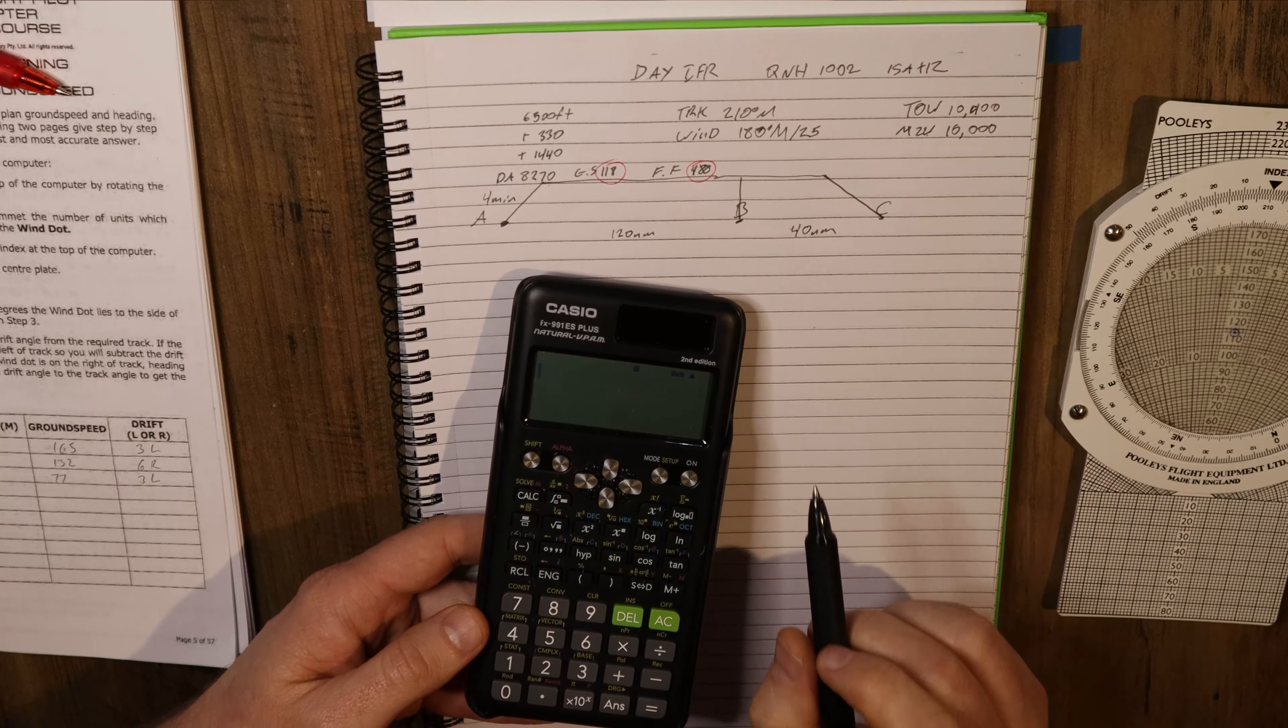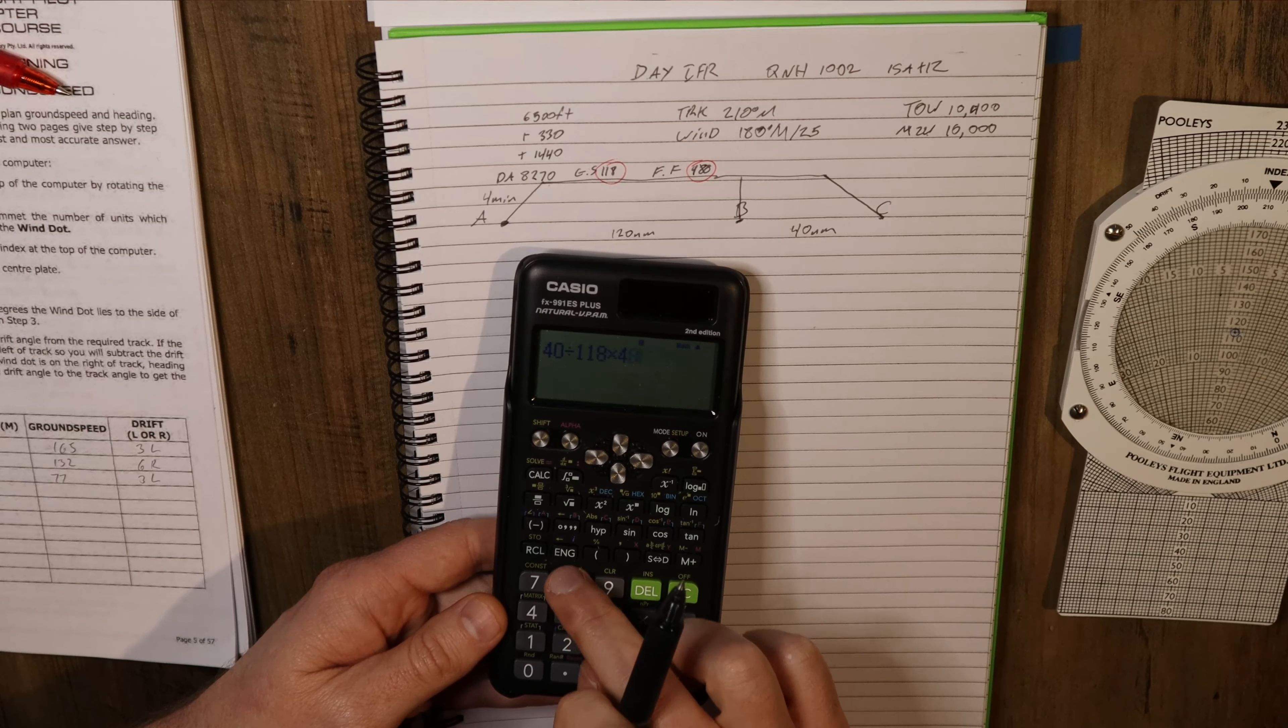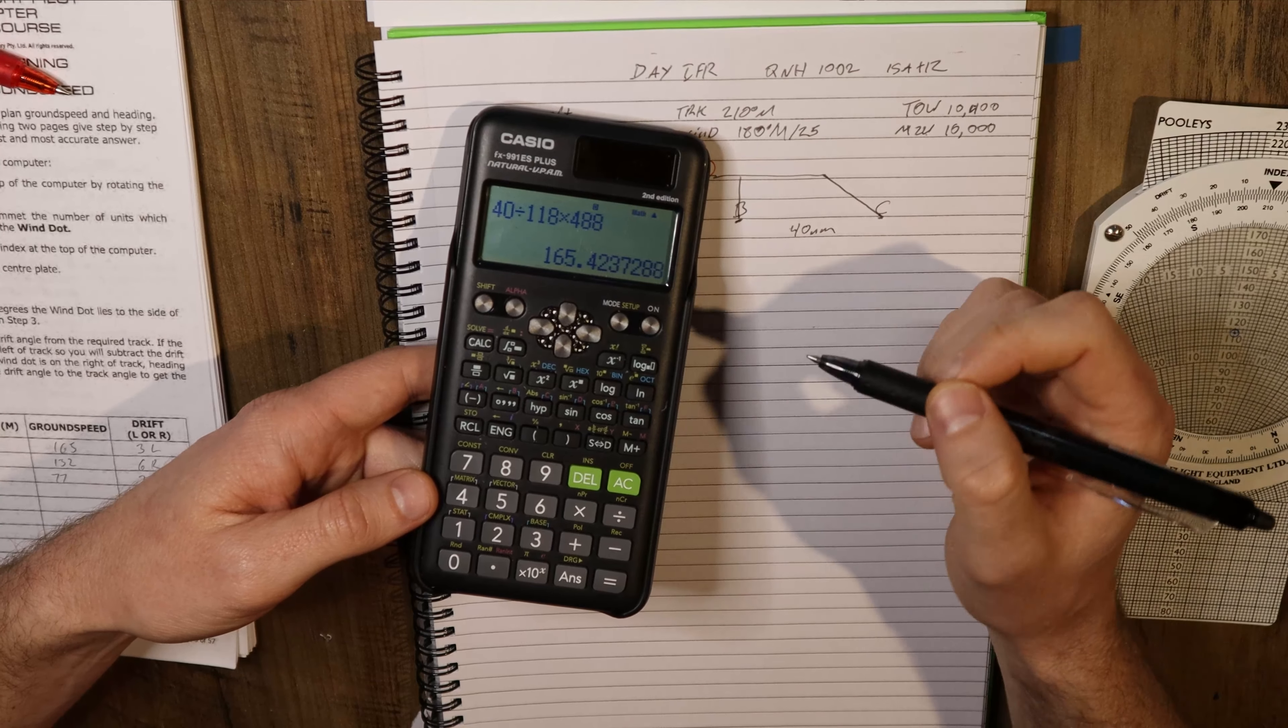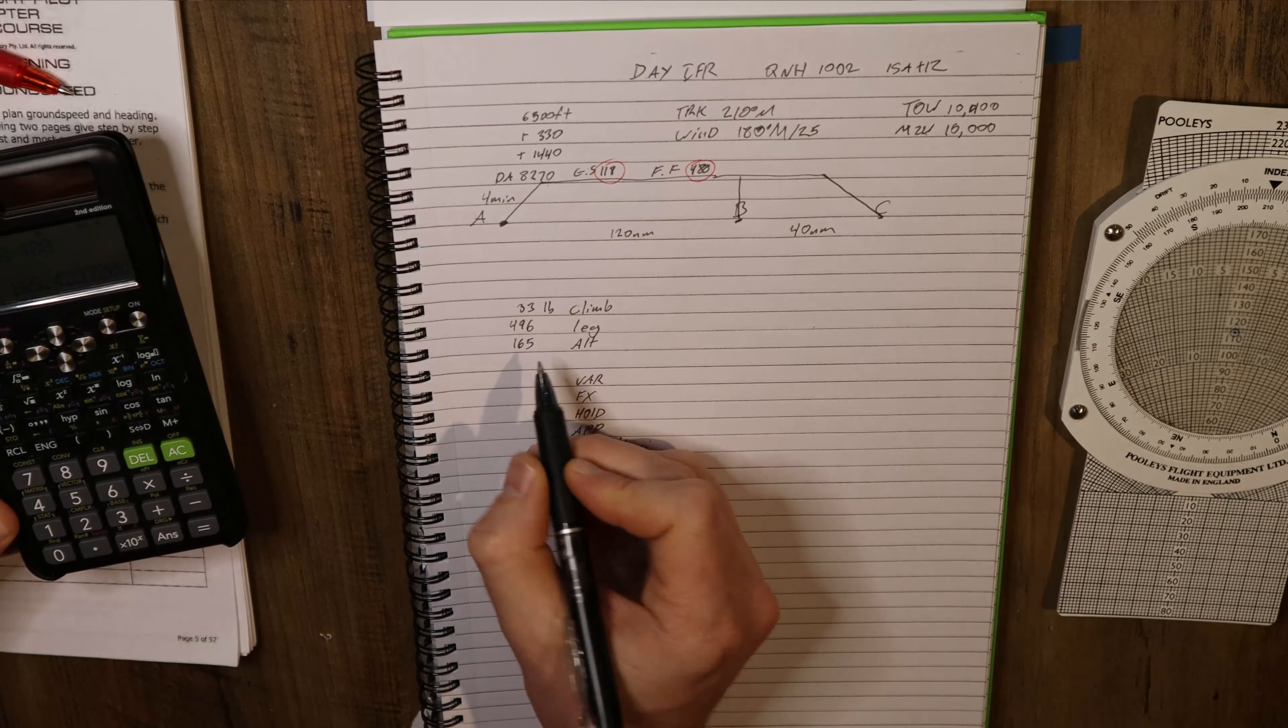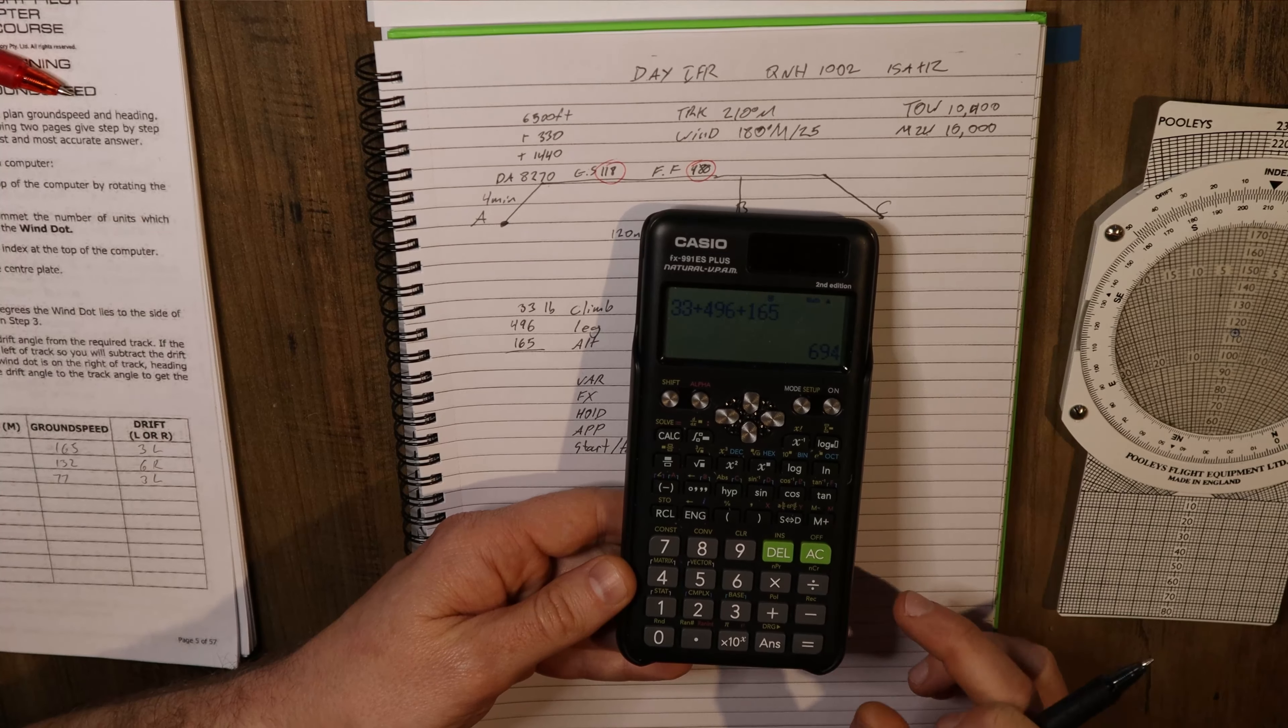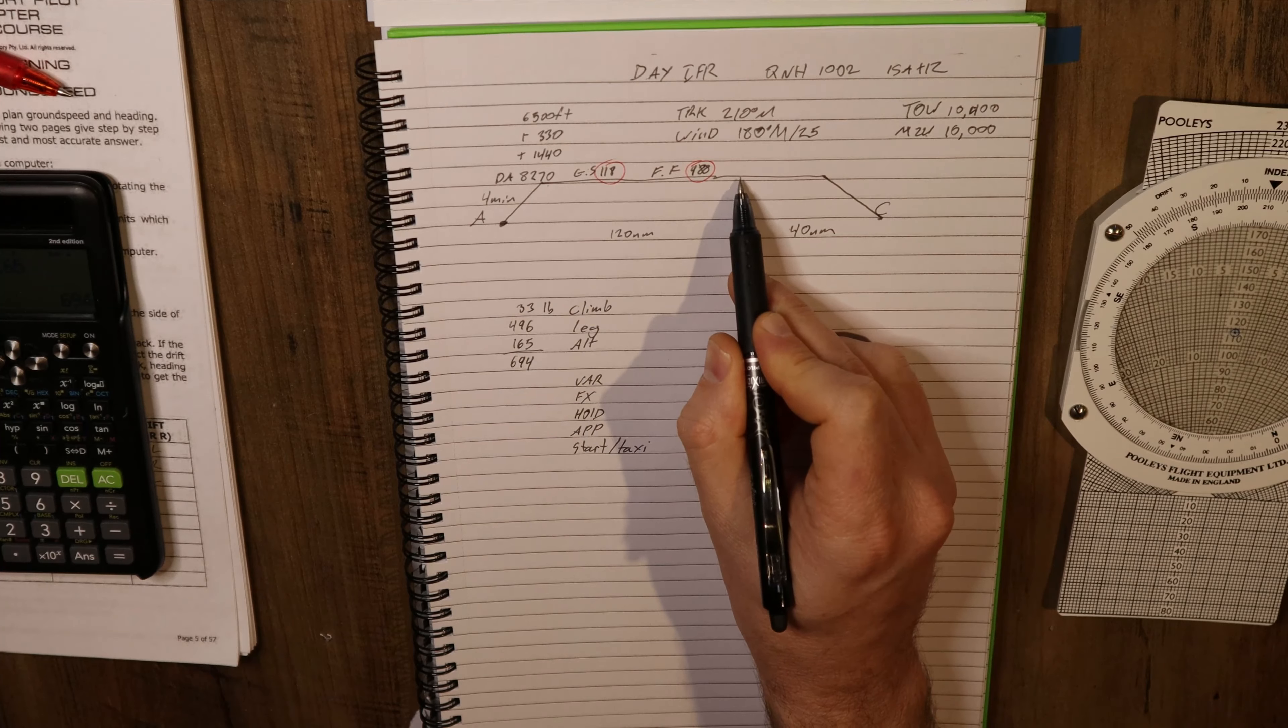Next we're going to get our alternate fuel. From B to C is 40 nautical miles, so the same thing: 40 divided by 118 times 488, which is 165.4, so 165. And again, you just use standard rounding for all of these numbers. If it's 0.5 or higher, you go up. If it's lower than 0.5, you go down. Now we're going to add these: 33 plus 496 plus 165 gives us 694 pounds. So 694 pounds is the fuel that we need to climb, fly to point B, and then fly to point C.